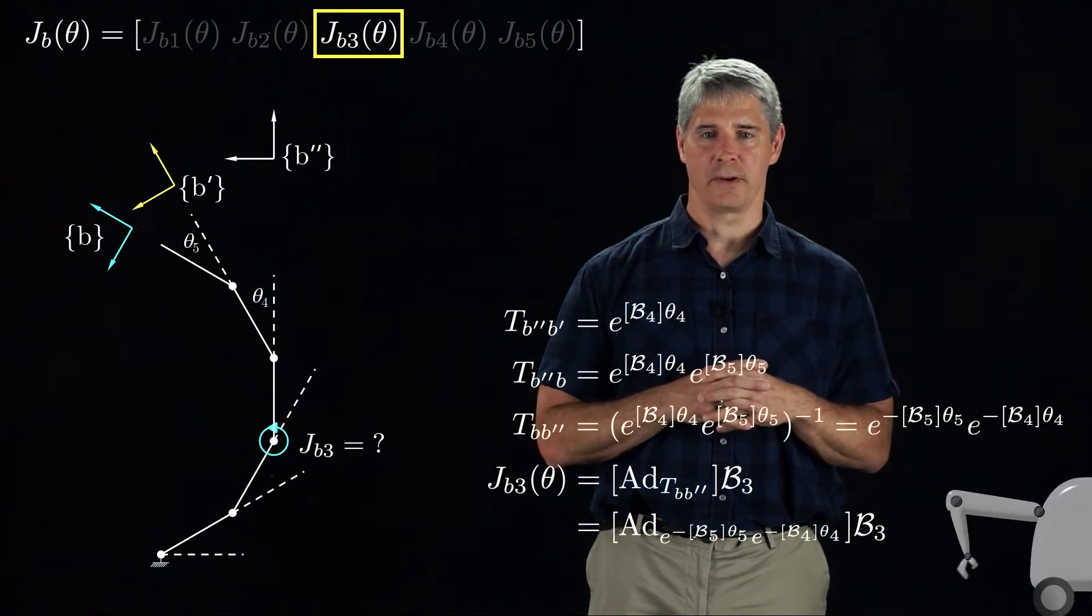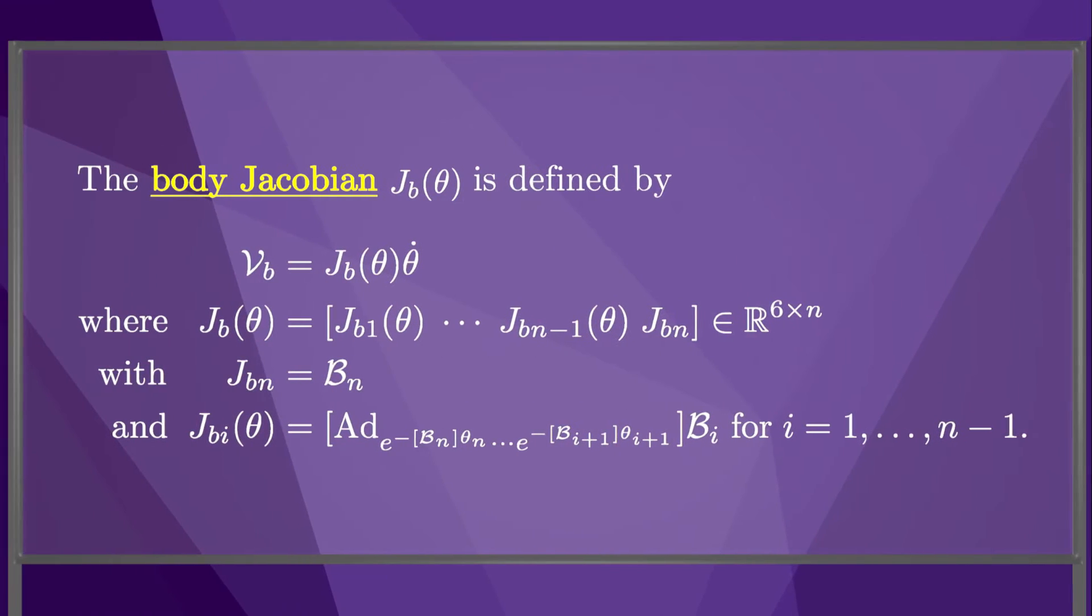The same reasoning applies for any joint, so we can generalize to this definition of the body Jacobian Jb. The last column of the body Jacobian is just the screw axis Bn when the robot is at its zero configuration. It does not depend on the joint positions, because no joint is between joint N and the B frame.